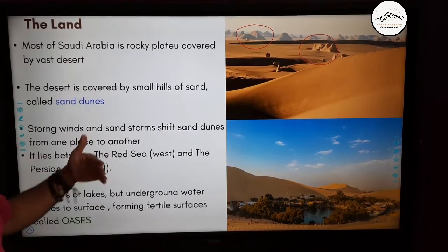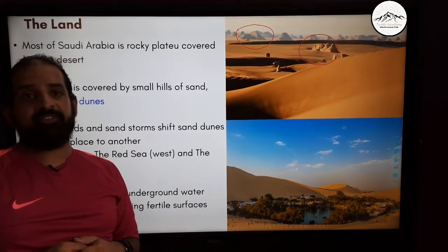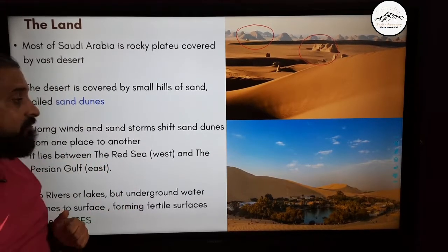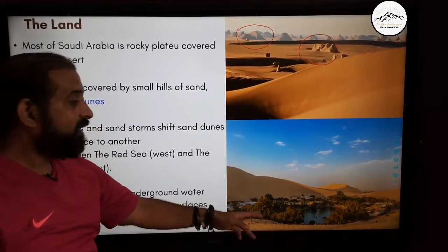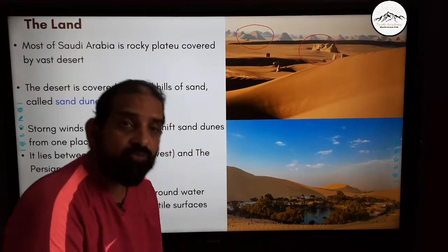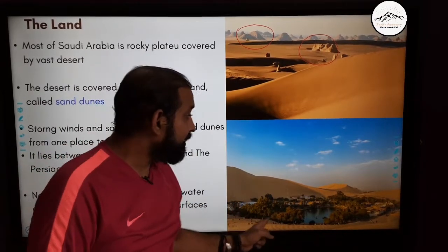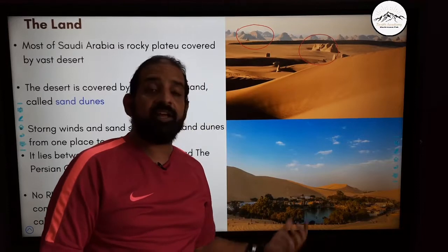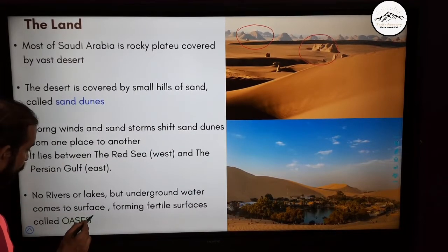The Red Sea is on the west and the Persian Gulf on the east. There are no rivers or lakes in the deserts. You may wonder what this photograph shows — this is groundwater, water which is below the ground that has now surfaced up. Because of this, the land becomes fertile and a lot of vegetation grows here. This is called an oasis.